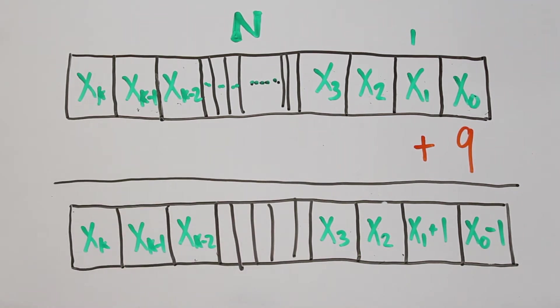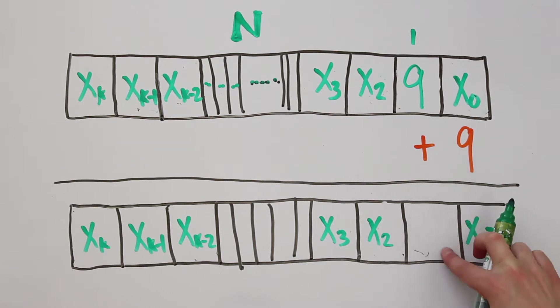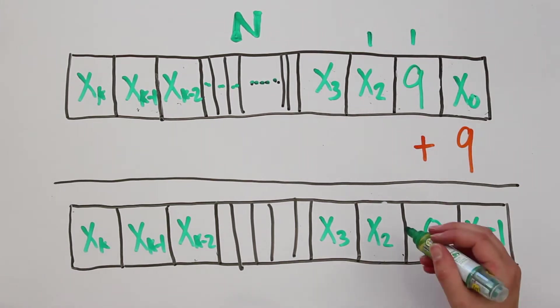Well, you might complain and point out that x1 might be a 9. In that case, we add 1 to x1, and now the 10's place is 0, we carry over a 100, and the 100's place increases by 1.